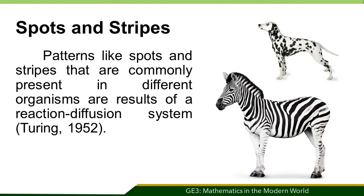In some animals, we can see spots and stripes. We can see patterns like spots on the skin of a giraffe or a dalmatian. On the other hand, stripes are visible on the skin of a zebra. Patterns like spots and stripes that are commonly present in different organisms are the results of a reaction-diffusion system, according to Alan Turing. The size and shape of the pattern depend on how fast the chemicals diffuse and how strongly they interact.